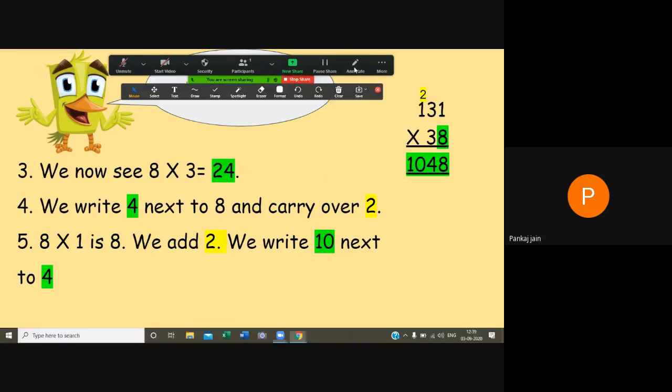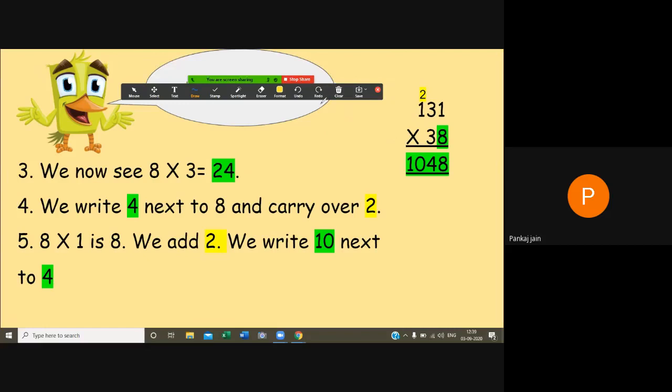Now here you have this annotation option, just click on it. Now you will get the sub-options: mouse, select, draw, stamp, spotlight, eraser, format, undo, redo, clear, save, and this red cross. If you wanted to write something, click on the text, click anywhere in the screen and write a text like this.